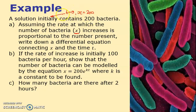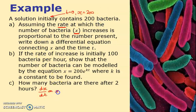They tell us to assume the rate at which the number of bacteria increases. Look out for the word 'rate' — I write dx/dt. This is proportional to the number present, which is x, so I can immediately write that as an equation: dx/dt equals kx, because it's proportional to x.